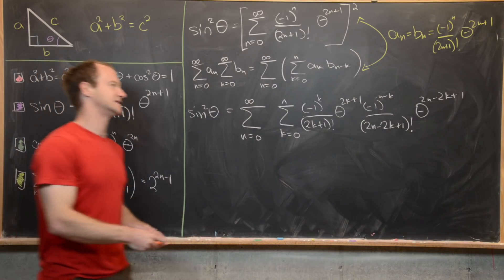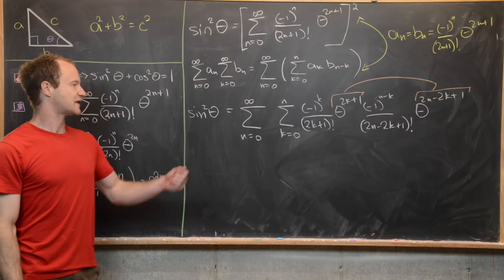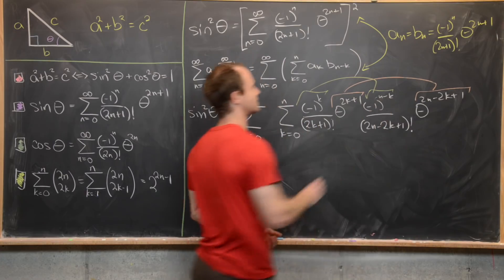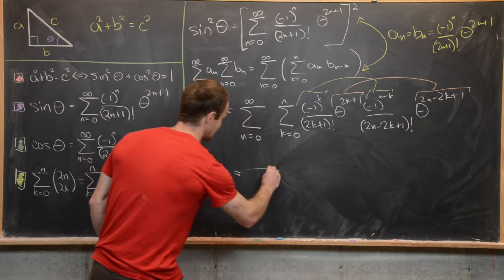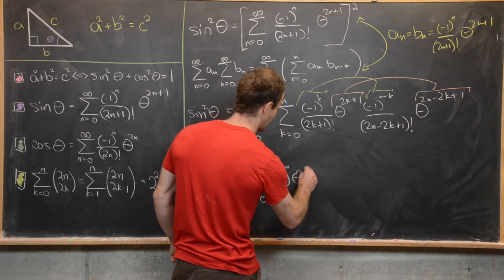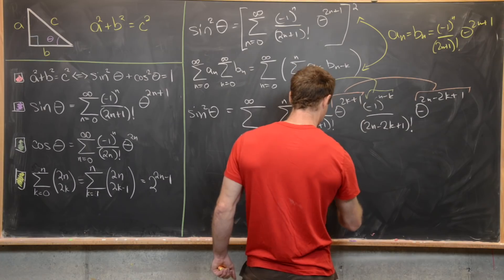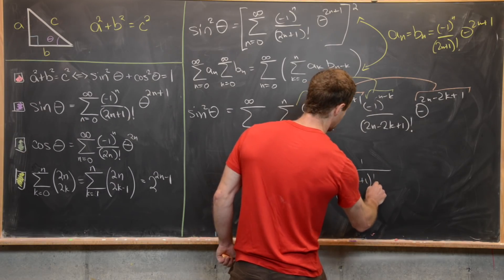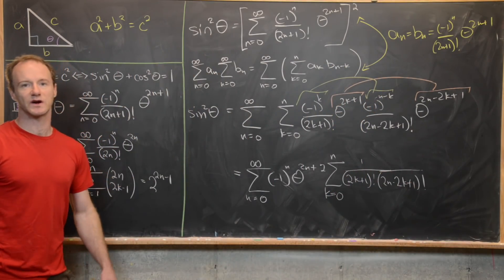The product of the two theta terms doesn't depend on k, so we can factor it out of the inner sum. Similarly, the alternating signs combine as minus one to the n, also independent of k and factorable. This gives the sum as n goes from zero to infinity of minus one to the n times theta to the two n plus two, times the inner sum as k goes from zero to n of one over two k plus one factorial times two n minus two k plus one factorial.